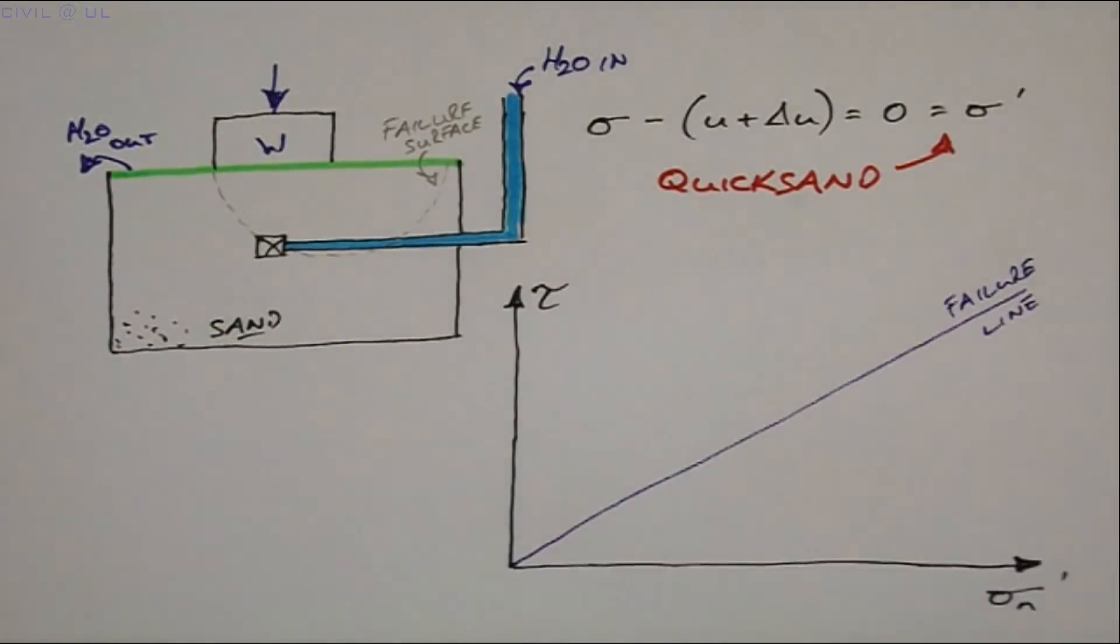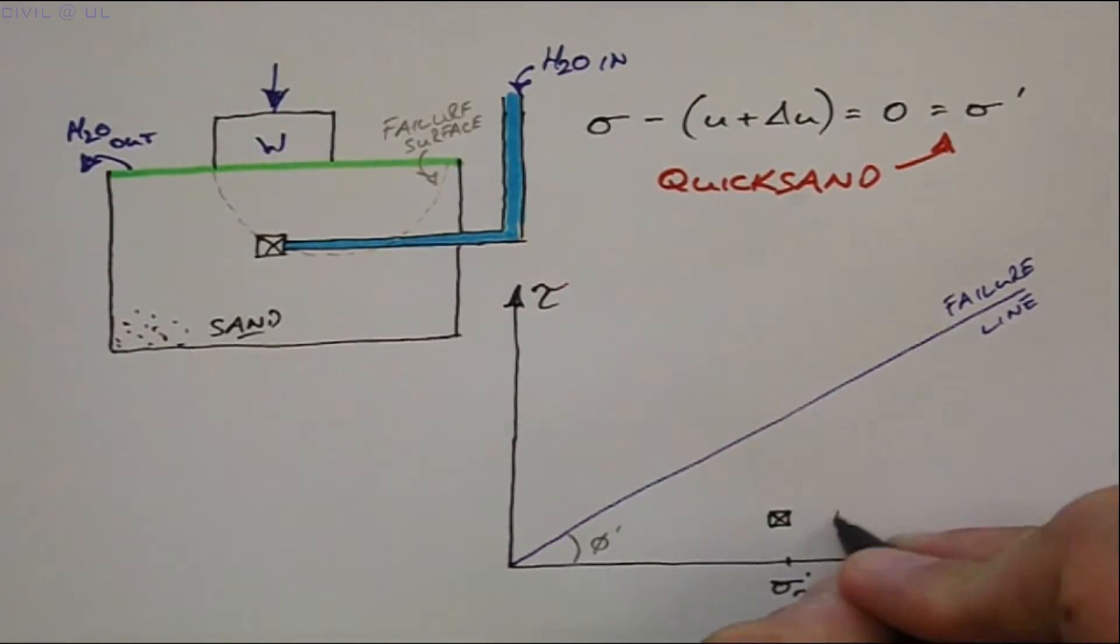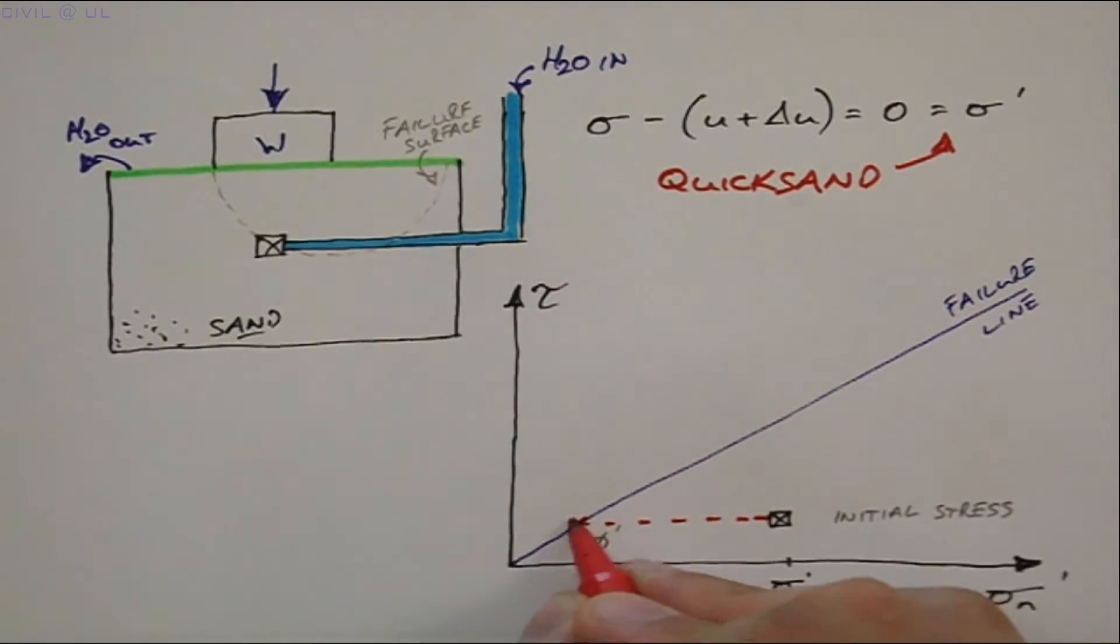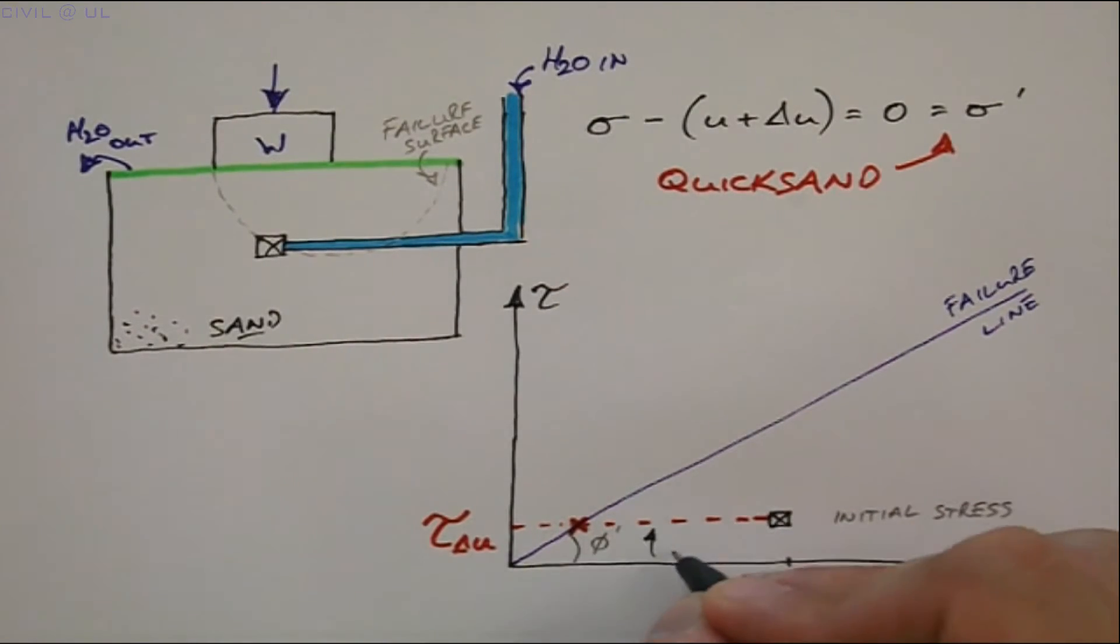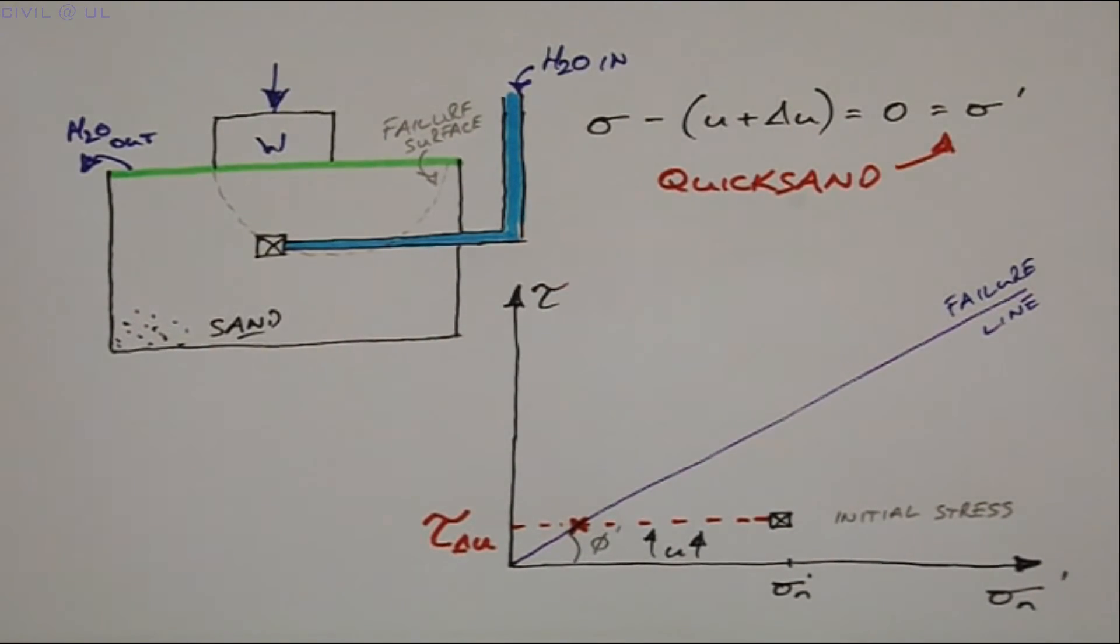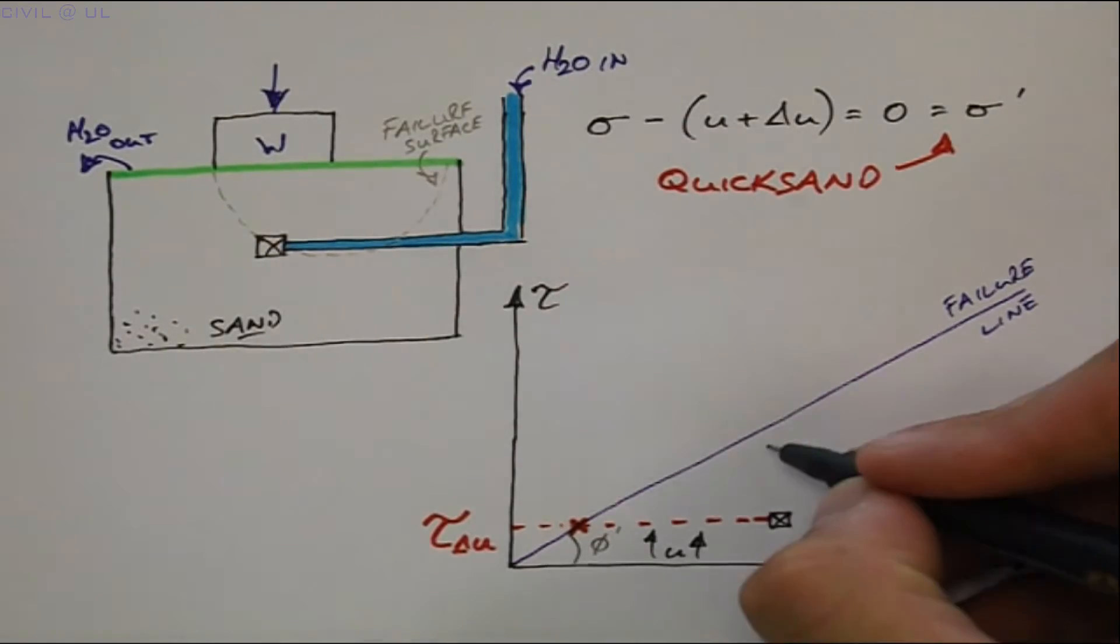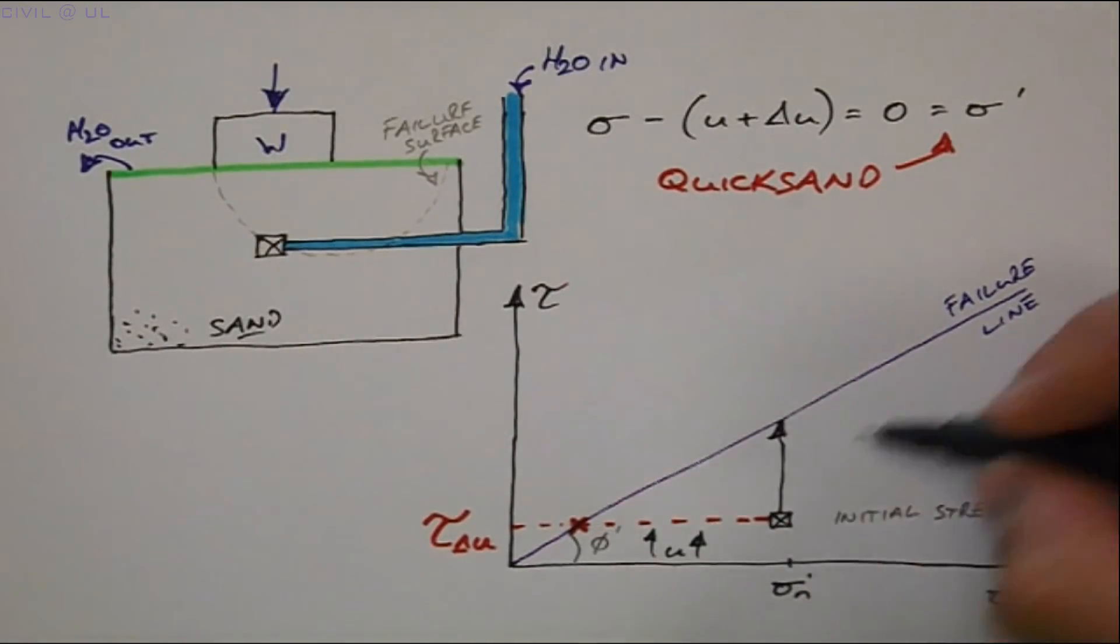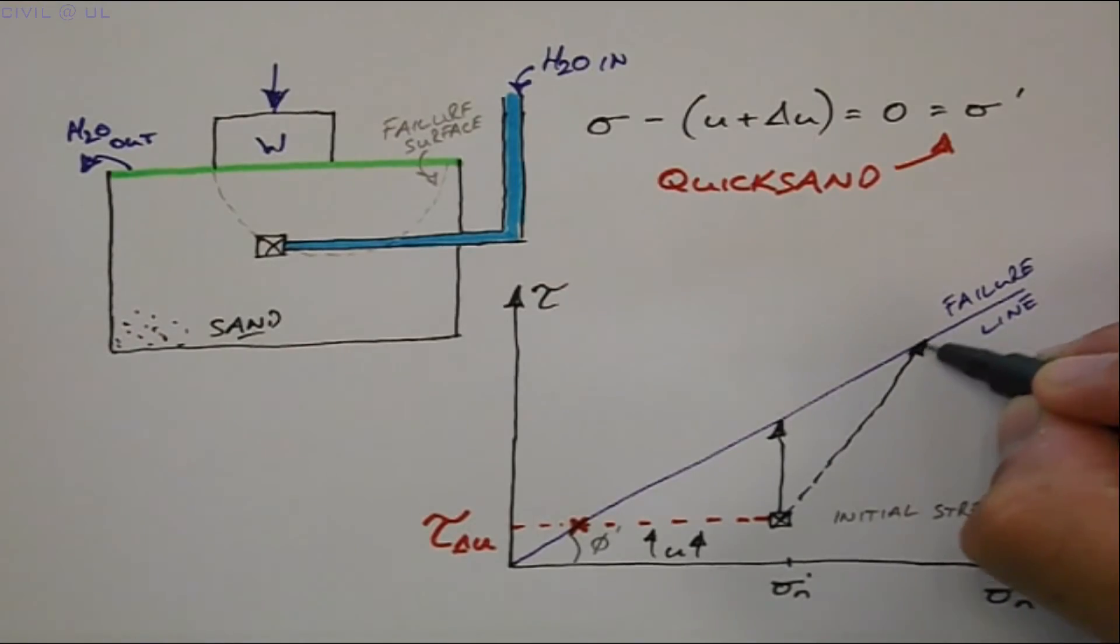Plotting the stress path for this scenario, and starting from the in situ stress condition for the element shown, we see the stress path to failure is now horizontal, as the pore water pressure is the only thing being changed in this test. The figure also shows the conventional vertical and loading effective stress path to failure.